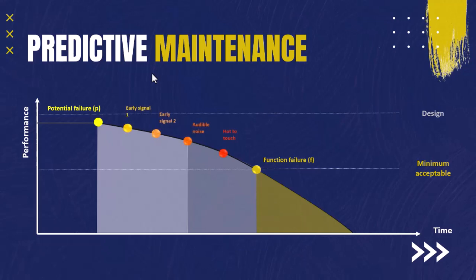Those signals could start as early signals noticeable only through readings from monitoring equipment, or more clear signals such as audible noise or hot equipment, which means the failure is very close to occurring.